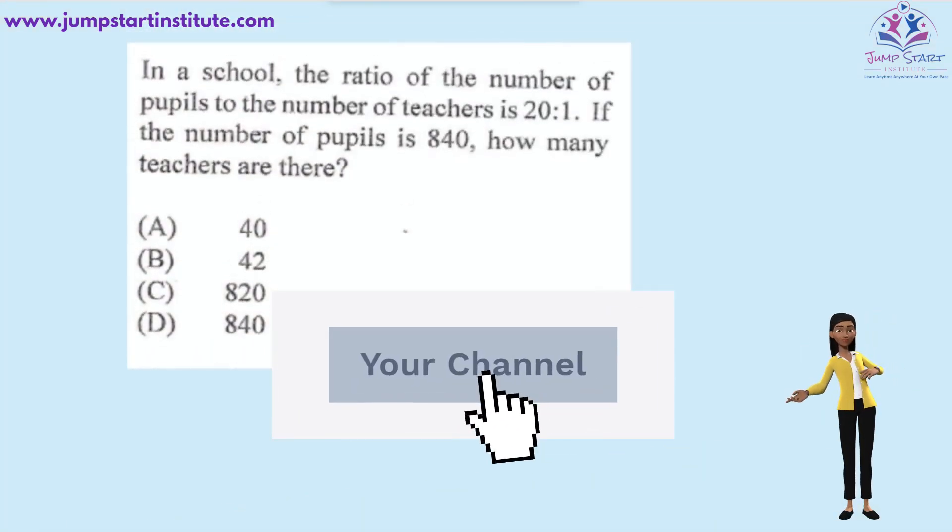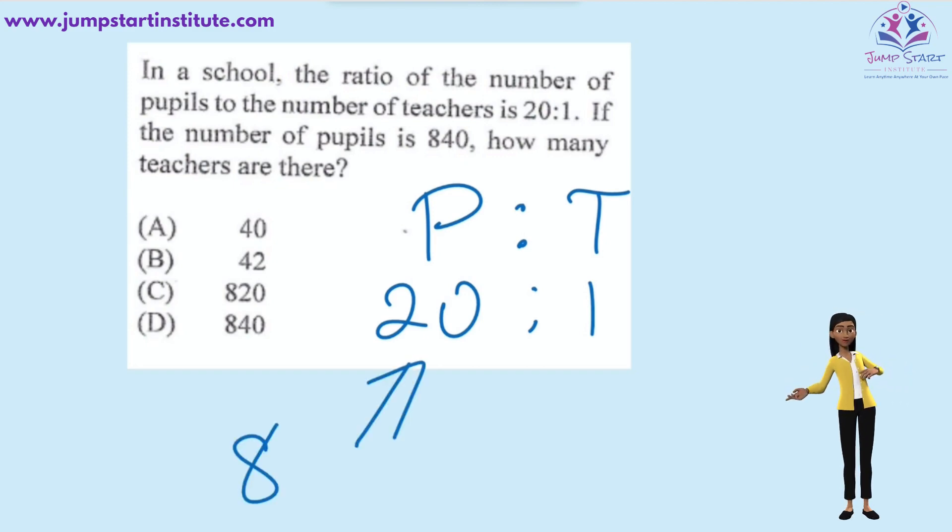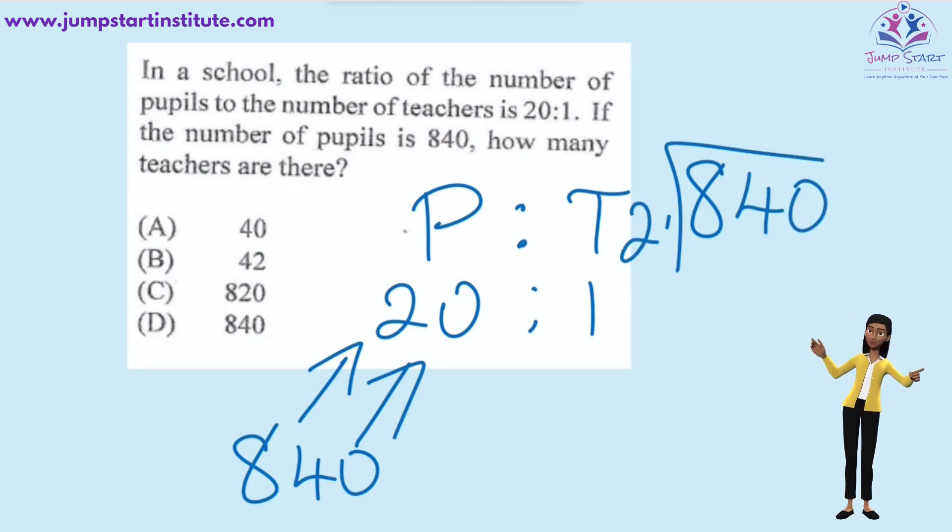In a school, the ratio of the number of pupils to the number of teachers is 20 to 1. If the number of pupils is 840, how many teachers are there? As you can see, 840 is represented by 20 shares. So, in order to calculate how much is one share, we say 840 divided by 20. 20 into 84 goes four times.